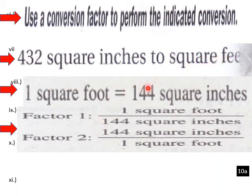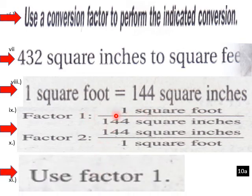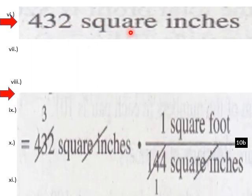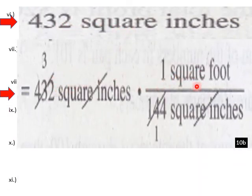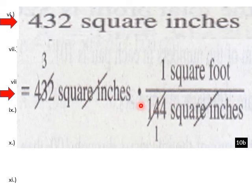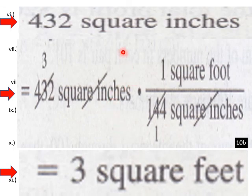Factor one is one square foot over 144 square inches, and factor two is 144 square inches over one square foot. Since we want to convert to square feet, which appears in the numerator of factor one, we use factor one. Applying it: 432 square inches times one square foot over 144 square inches — the square inches cancel. 432 divided by 144 equals 3, so we get three square feet.